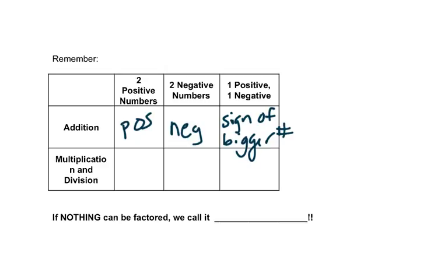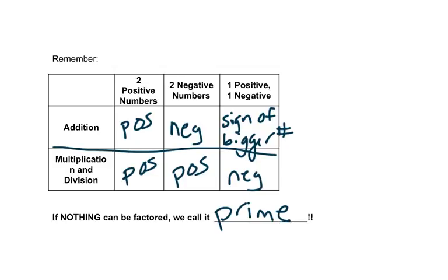If you multiply two positive numbers you get positive. If you multiply two negative numbers you also get positive. And if you multiply a positive and a negative you always get a negative. So it's really important that you keep these rules separate, that the ideas are separate in your head as we look at multiplication and addition. If nothing can be factored, we call it prime, just like we have prime numbers that can't be broken down any further.